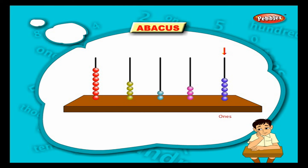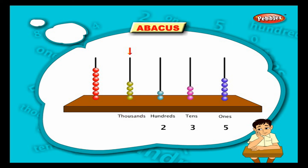In this abacus, we have five purple balls in the ones place — it means there are five ones. Move one step left: you have three pink balls in the tens place — it means there are three tens. One step to the left: two blue balls in the hundreds place — there are two hundreds. Next, there are four green balls in the thousands place.